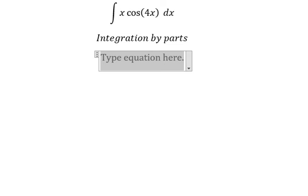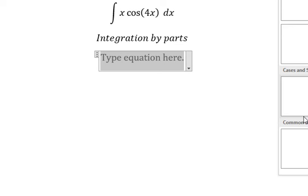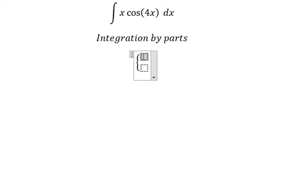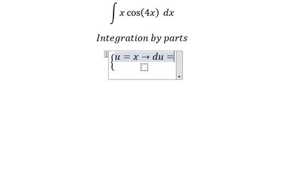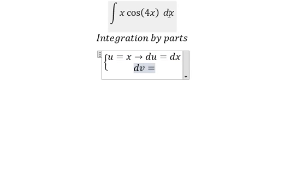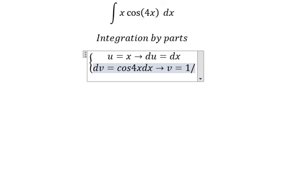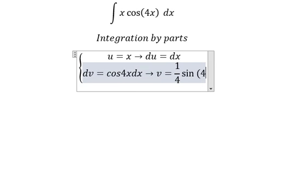So I need to put u equals to x. Next we differentiate both sides, we have du equals to dx. dv we have cosine 4x dx. The integration of this one we have v equal to 1 over 4 sine 4x.